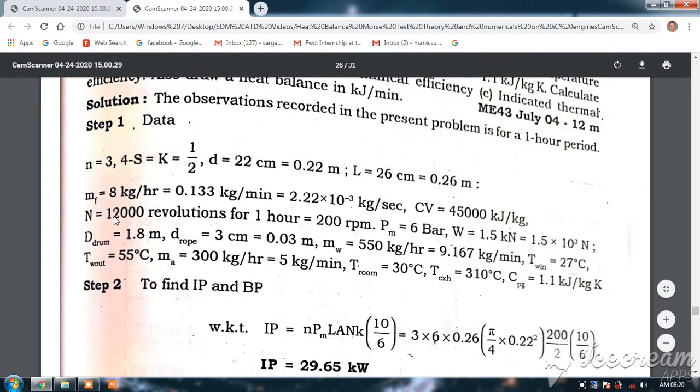N, the number of revolutions is 12,000 for an hour, so it becomes 200 rpm. Then, mean effective pressure is 6 bar, the load is 1.5 kilo Newton, so convert into Newton by multiplying by 10 raise to 3.